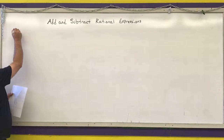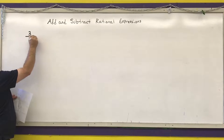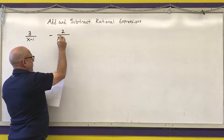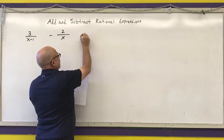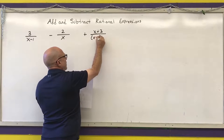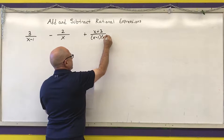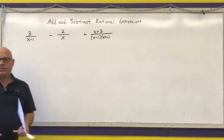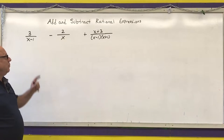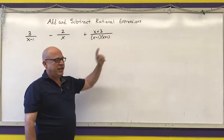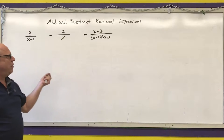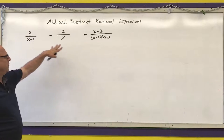The easiest way to show this is with examples. The first one is 3 over (x minus 1) minus 2 over x plus (x plus 3) over (x minus 1)(x plus 1). This example is already in factored form. I want to find the lowest common denominator between (x minus 1), x, (x minus 1), and (x plus 1). I want to write the highest power that each factor appears in.